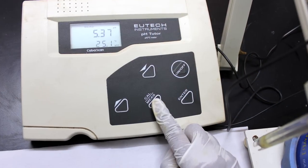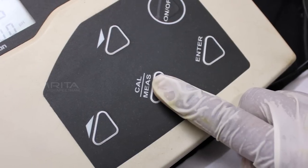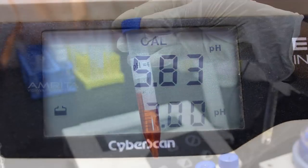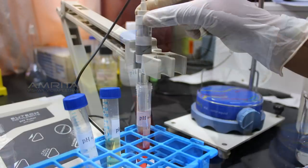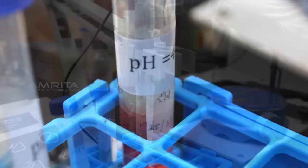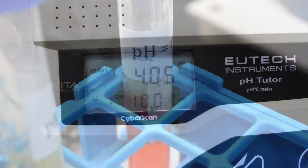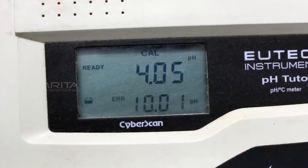Now calibrate pH meter by clicking on the button labeled Cal on the instrument and dip the pH electrode into the standard buffer labeled pH equals 4. Note down the value displayed on the pH meter which should be around 4.